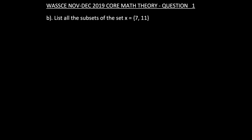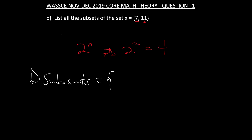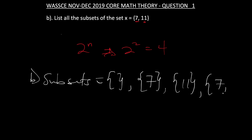Moving on to question 1B: list all the subsets of the set X = {7, 11}. To find the number of possible subsets of a set we use 2 raised to the power n, where n is the number of elements. Here the number of elements is 2, so this will be 2 raised to the power 2, which is 4. So the subsets are: the empty set, {7}, {11}, and {7, 11} — giving us 4 subsets.